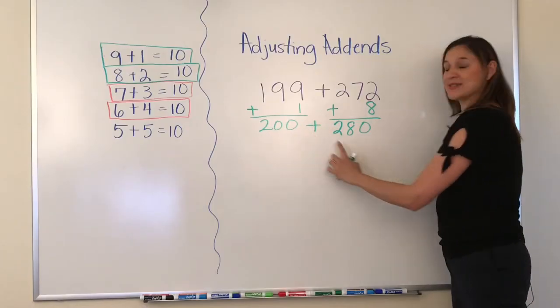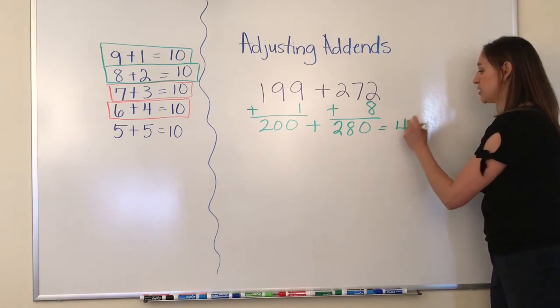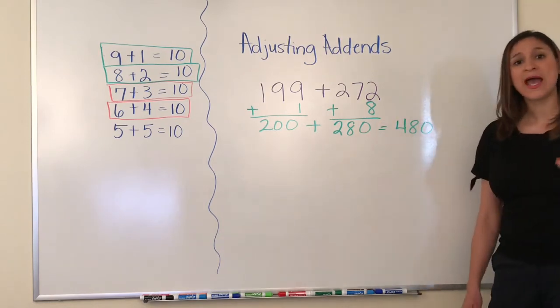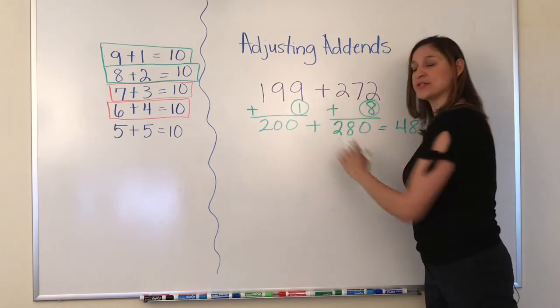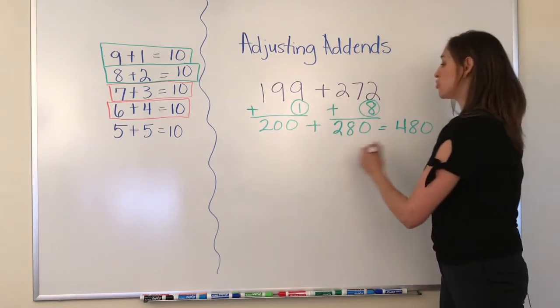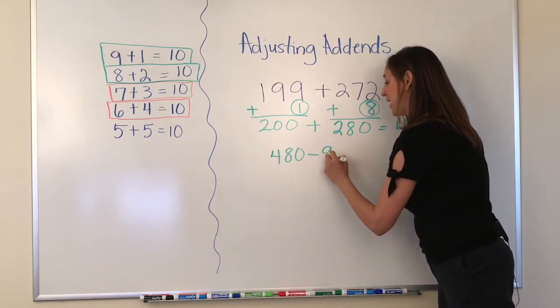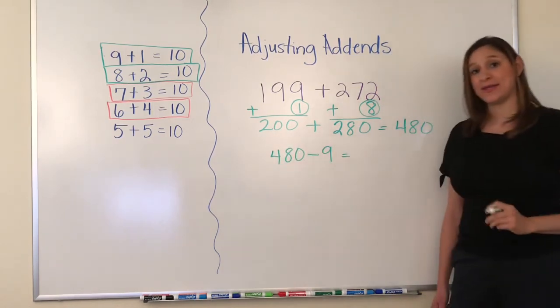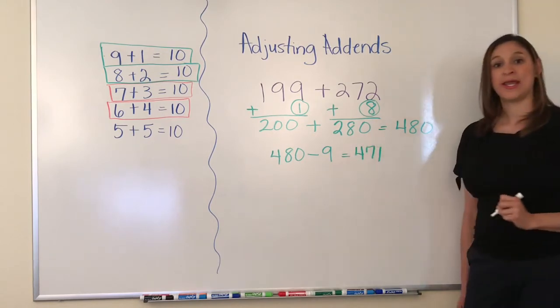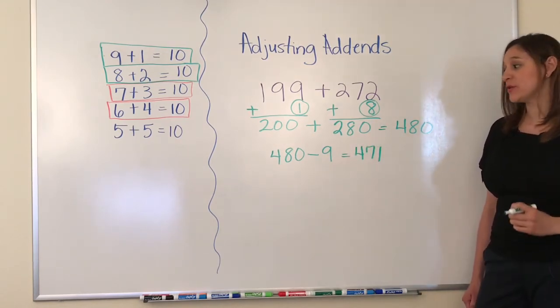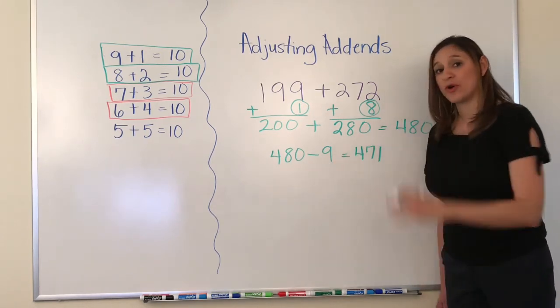So 200 plus 280 equals 480. I will now add 8 plus 1 is 9, so 480 minus 9 is 471.